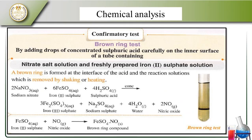Adding freshly prepared iron sulfate solution gives us the brown ring. Sodium nitrate and iron sulfate with sulfuric acid gives iron sulfate, sodium sulfate, water, and nitric acid. Iron sulfate reacts to give the brown ring. This is the brown ring test for nitrate ions.